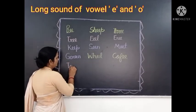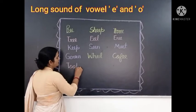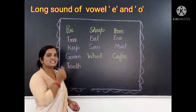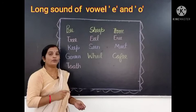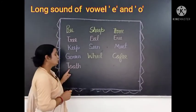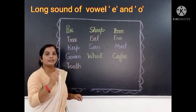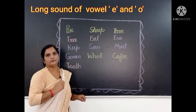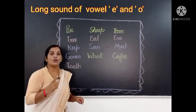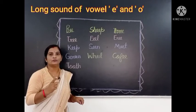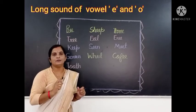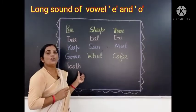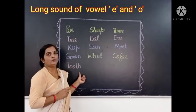T-O-O-T-H. Tooth. Tooth means one tooth — one tooth. Okay? Tooth. This is a long sound of vowel O word. Short sound of vowel O words are: rod, cord, cot. But this is the long sound of vowel O. Okay?